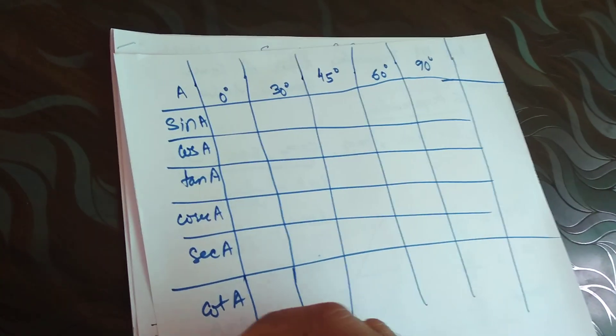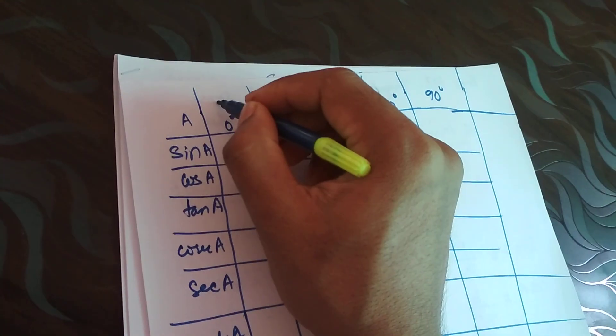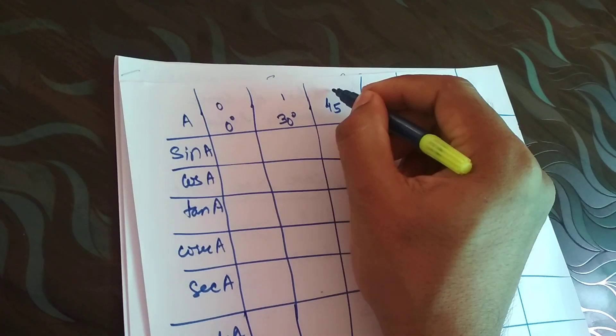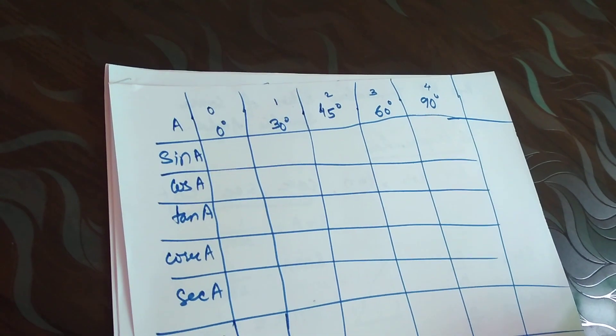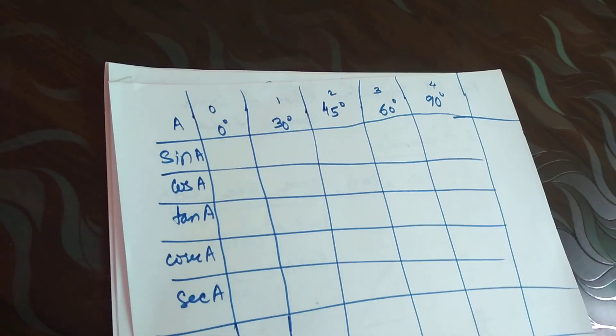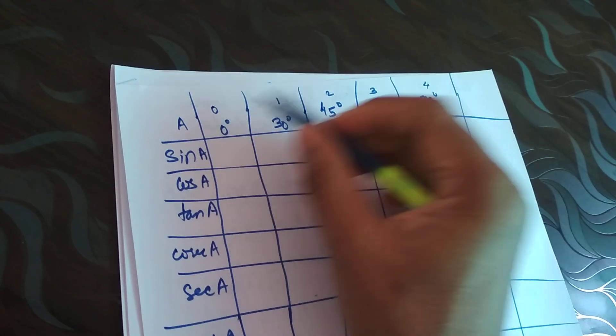Now listen carefully how we are going to do this. First of all I will mark it as 0, 1, 2, 3, 4. Please listen carefully: 1, 2, 3, 4. The first is done.